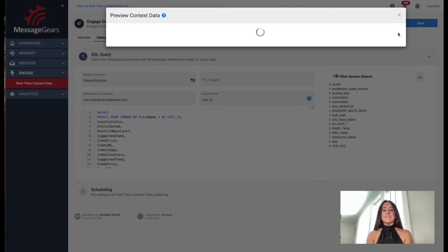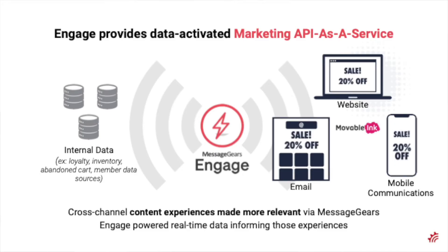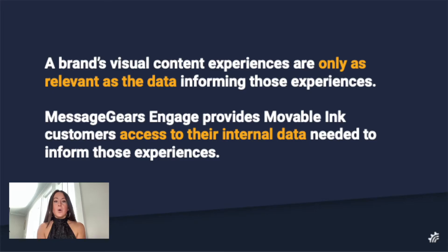Once connected, I can select the data I want Engage to directly access — it's that easy. In this case, I have member profile data for each of my recipients, indicating what items I want to recommend to them based on their recipient ID and last purchase. I can then promote this data up to Engage to have it be available via API to personalize my dynamic marketing messages, or pair it with an integration like Movable Ink to create best-of-breed content.